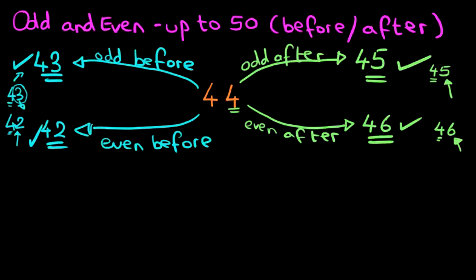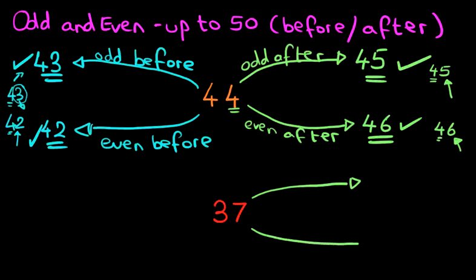We're going to work through one more example, and we're going to go through this one relatively quickly because it is a nice easy one. This time let's suppose we've got the number 37. The first part of the question — let's do the numbers after. We want to find out the odd number after, and we also want to work out the even number after.